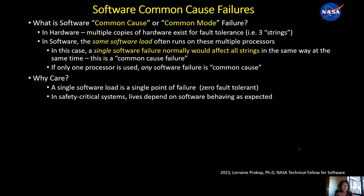And if only one processor is there, then you could say that any software failure is a common cause failure. So why care about this? It's because a single software load is a single point of failure — it's zero fault tolerant. And if you have a safety-critical system, lives depend on that one set of software doing the right thing.